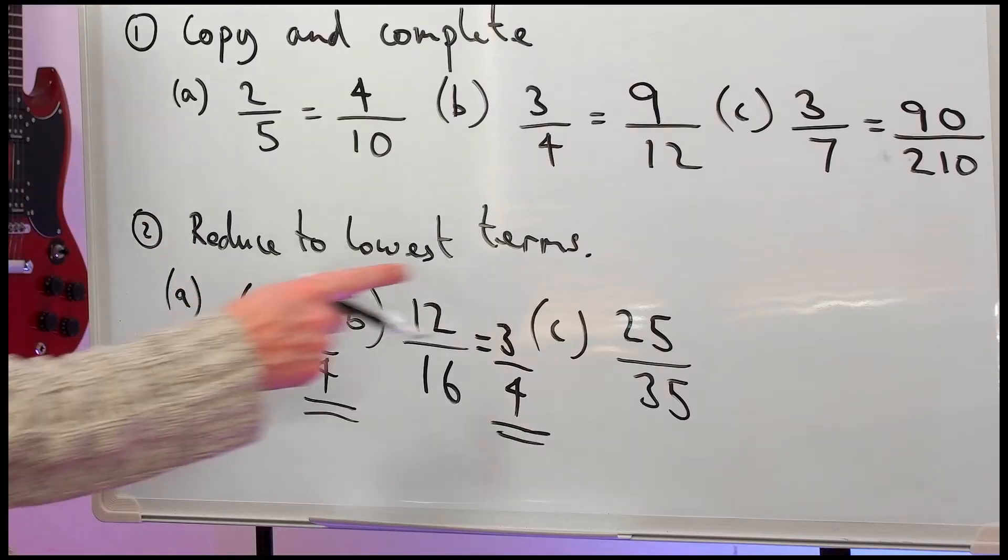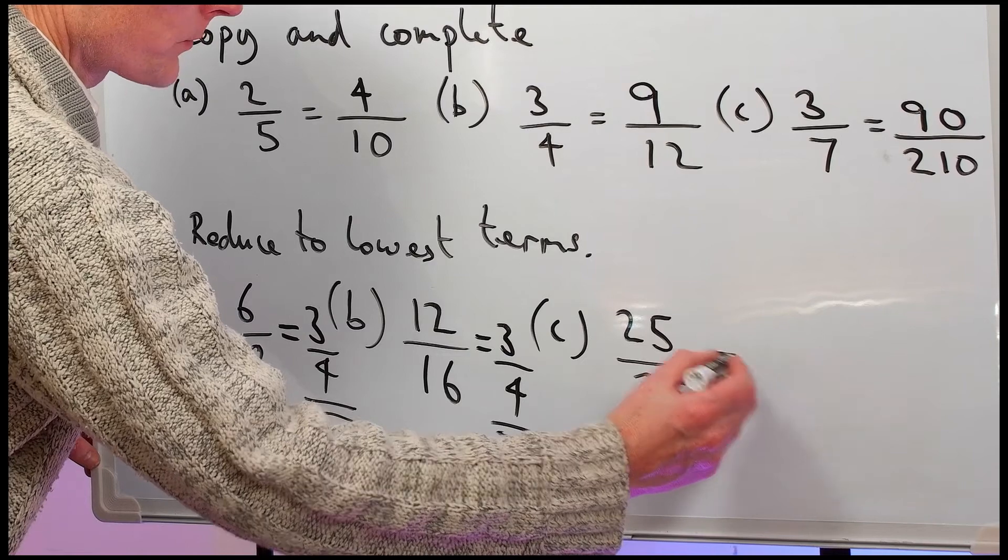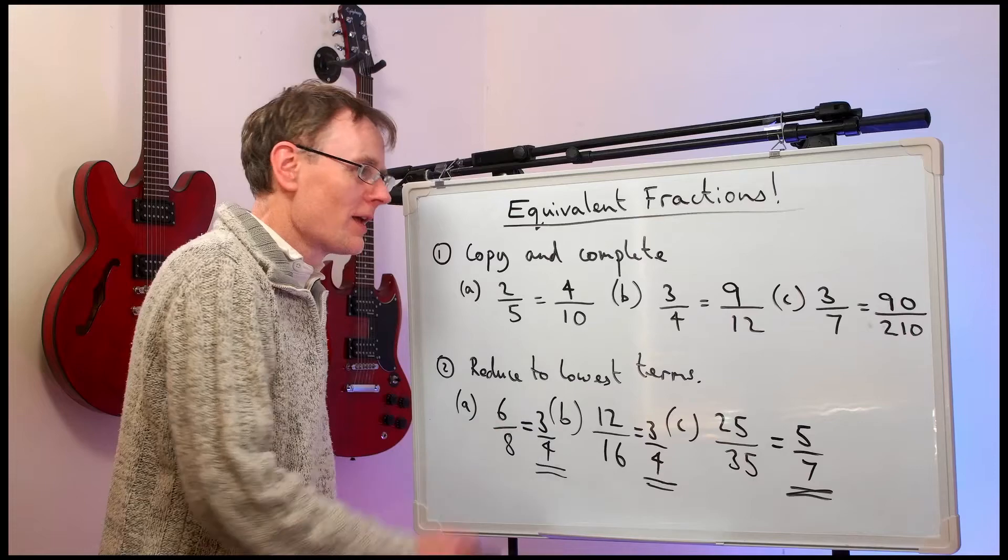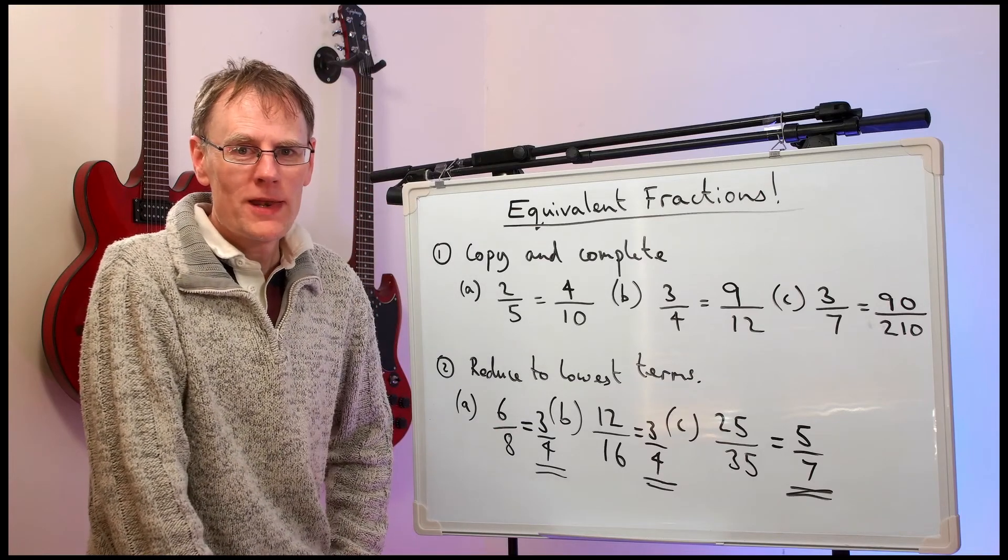Part C. We can divide the top and the bottom by five. Five into twenty-five goes five times. Five into thirty-five goes seven times. Okay. There we are. I hope that helps.